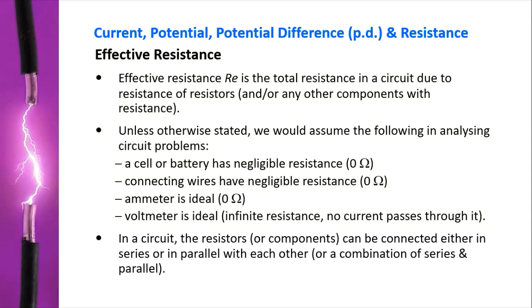Unless otherwise stated, we will assume the following in analyzing circuit problems. A cell or a battery has negligible resistance. Connective wires have negligible resistance. An ammeter is ideal, which means it has zero resistance. A voltmeter is ideal, which means it has infinite resistance, so no current passes through it.